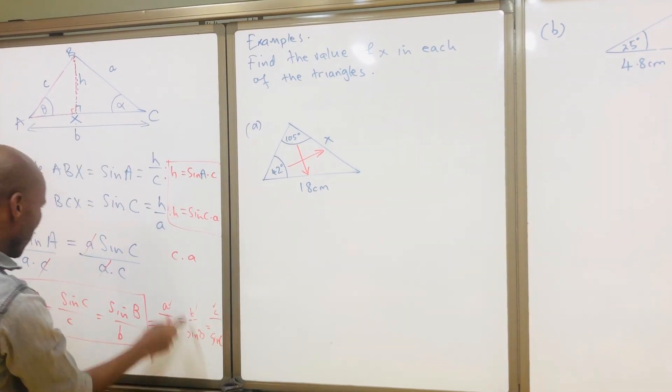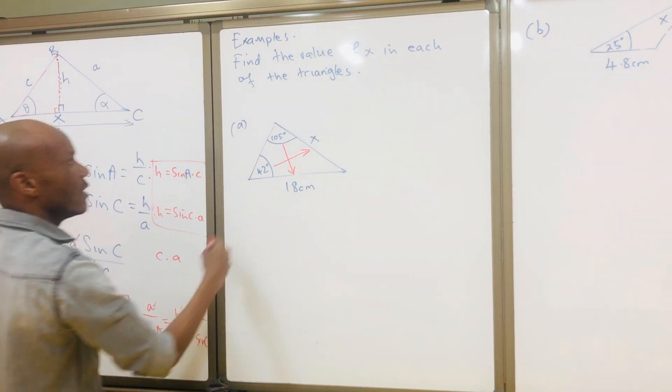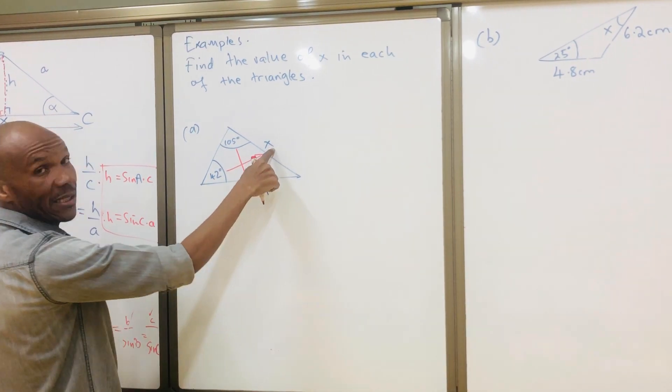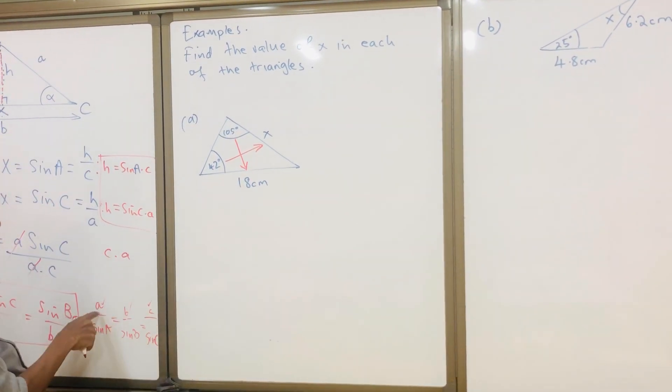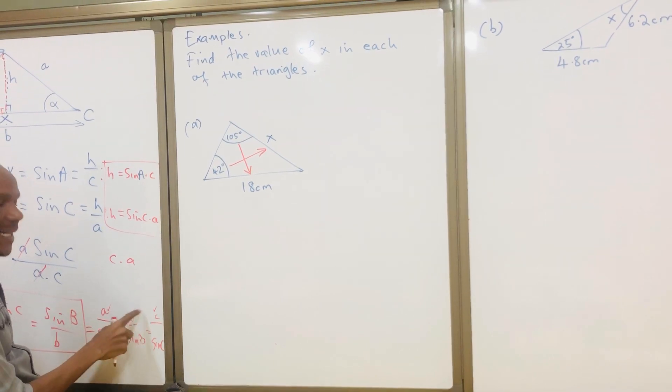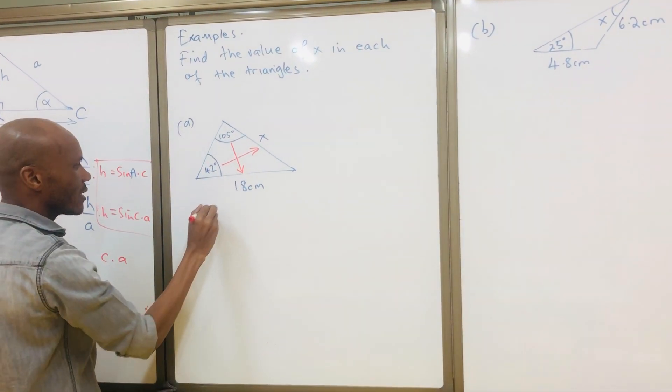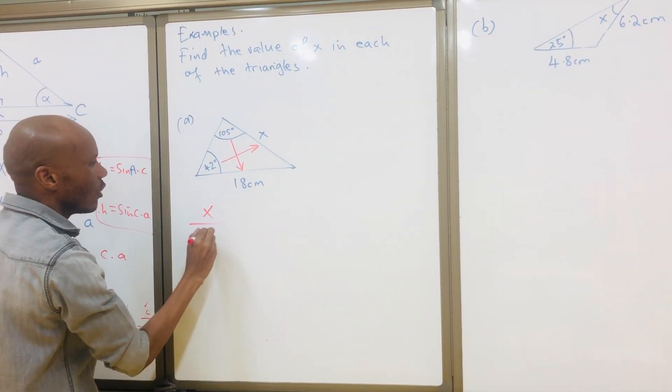I'm looking for the side. If I'm looking for the side, you use the ones where side is on top. So I will say x over sine 42, which is equal to 18 over sine 105.